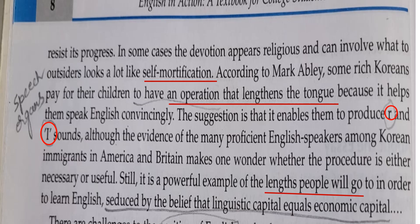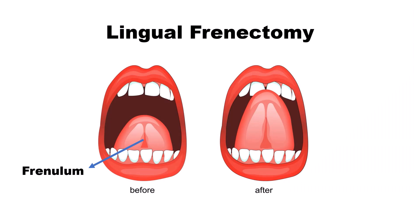Now let us look at the pronunciations and the role the tongue plays in producing R and E. The operation is called lingual frenectomy. Below the tongue there is a small nerve-like thing connecting the tongue to the lower part of the mouth — it is called the frenulum. When they cut open this frenulum, the tongue elongates, becomes longer, and can touch the upper palate. That enables the letters R and E to be pronounced clearly without any problem. When E is pronounced, the tongue raises and touches the upper palate — that is the reason Koreans get their children's tongues operated.